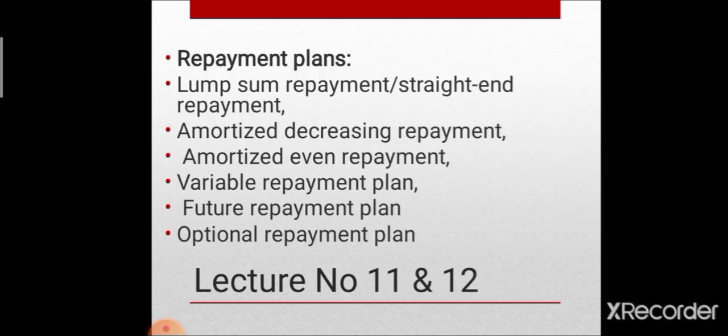Lecture numbers 11 and 12 cover different repayment plans — what is meant by repayment, what is meant by repayment plans, and the different types. There are six major types: lump sum repayment plan; amortized repayment plan (which includes amortized decreasing and amortized even repayment plans); variable repayment plan; future repayment plan; and optional repayment plan.